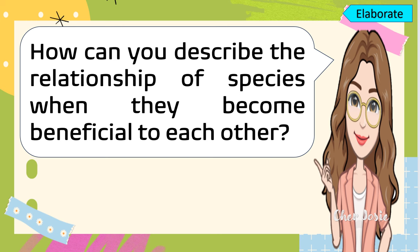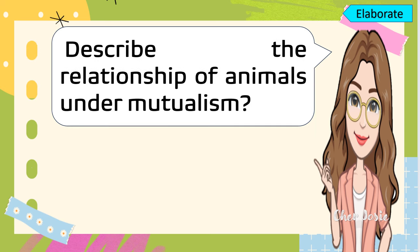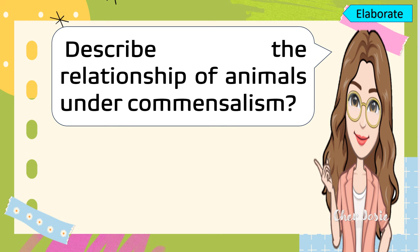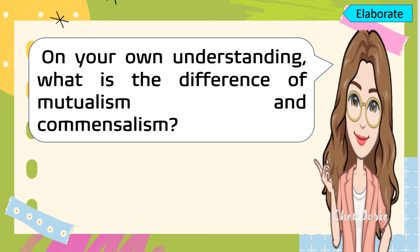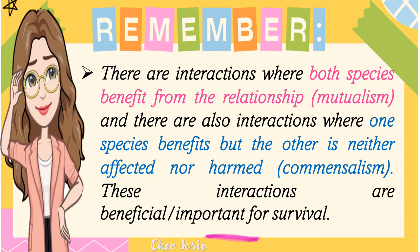Based on our discussion, how can you describe the relationship of species when they become beneficial to each other? Kindly describe the relationship of animals under mutualism. How about the relationship of animals under commensalism? What is the difference between mutualism and commensalism? Here are the things you should remember: interactions where both species benefit from the relationship are called mutualism. Interactions where one species benefits while the other is neither affected nor harmed are called commensalism. These interactions are beneficial and important for survival.